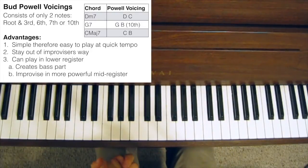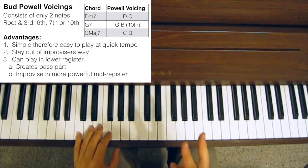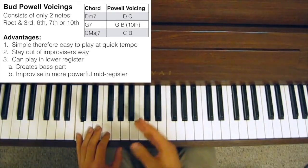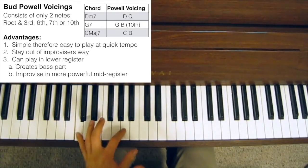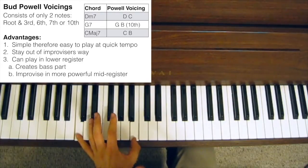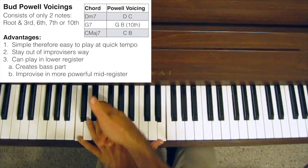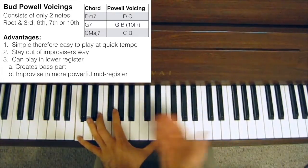Essentially a Bud Powell style chord voicing consists of just two notes: the root down the bottom in the bass, and then either the 3rd, the 6th, the 7th, or the 10th on top. The 10th, of course, being the same as the 3rd, just an octave up.